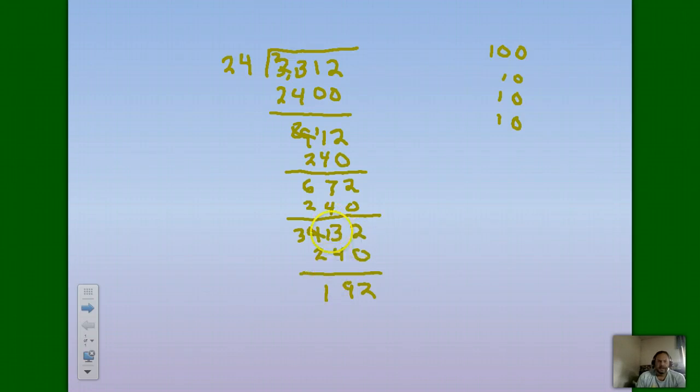Next step then. 2 goes into 19 about 9 times, so I'm going to try 9. So over here, I'm going to do 24 times 9. 9 times 4 is 36, carry the 3. 9 times 2 is 18, 18 plus 3 more is 216. I have a problem. 216 is larger than 192, so this is too big. So I've got to go with a smaller number, and I'm going to try 8. 24 times 8. 8 times 4 is 32, carry the 3. 8 times 2 is 16, plus 3 more is 192. Hey, that's the number I'm looking for. I multiplied by 8 and I got 192.